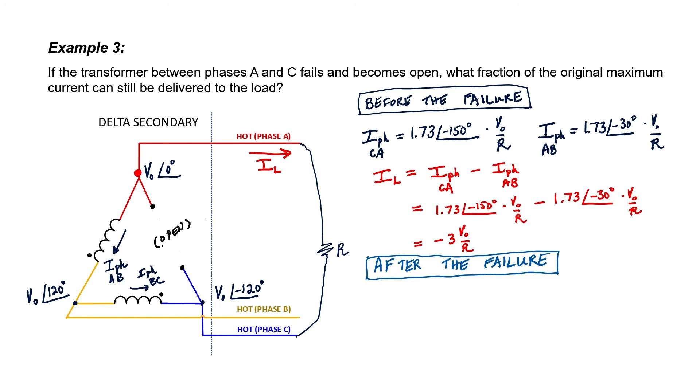the currents are going to change just a little bit. The phase current between A and B is going to be just what it was before because the voltage between phase A and phase B is exactly what it was before the failure. This current is going to be zero because it's not flowing at all, and that's going to cause the line current to change.